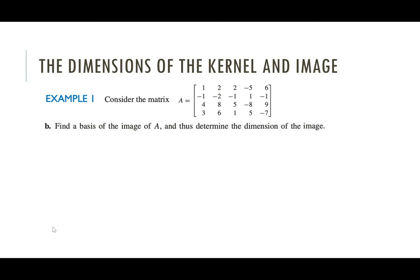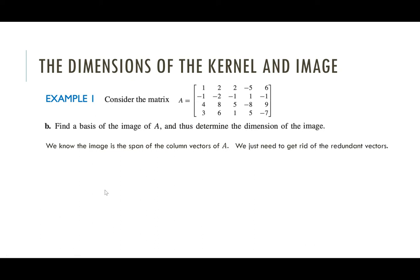Now let's talk about the image. How do we find a basis of the image of A? We know the image is the span of the column vectors of A, so finding spanning vectors is easy — all the column vectors together span the image. We just need to get rid of the redundant columns. The redundant vectors in A correspond to the free variables in the reduced row echelon form of A.